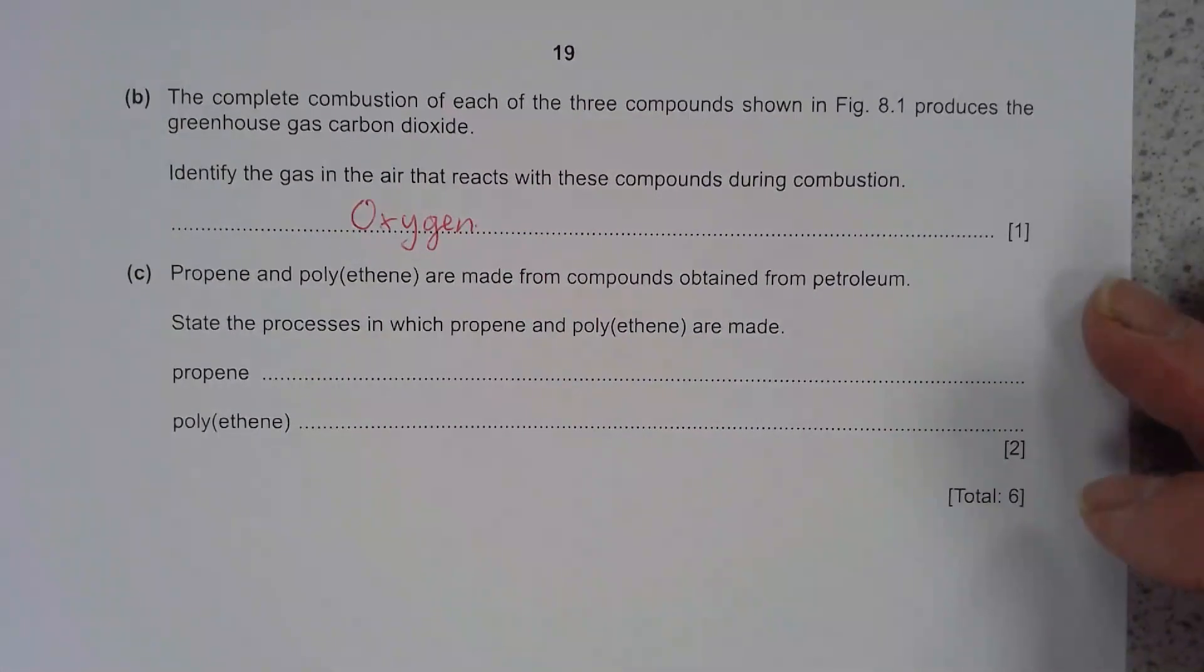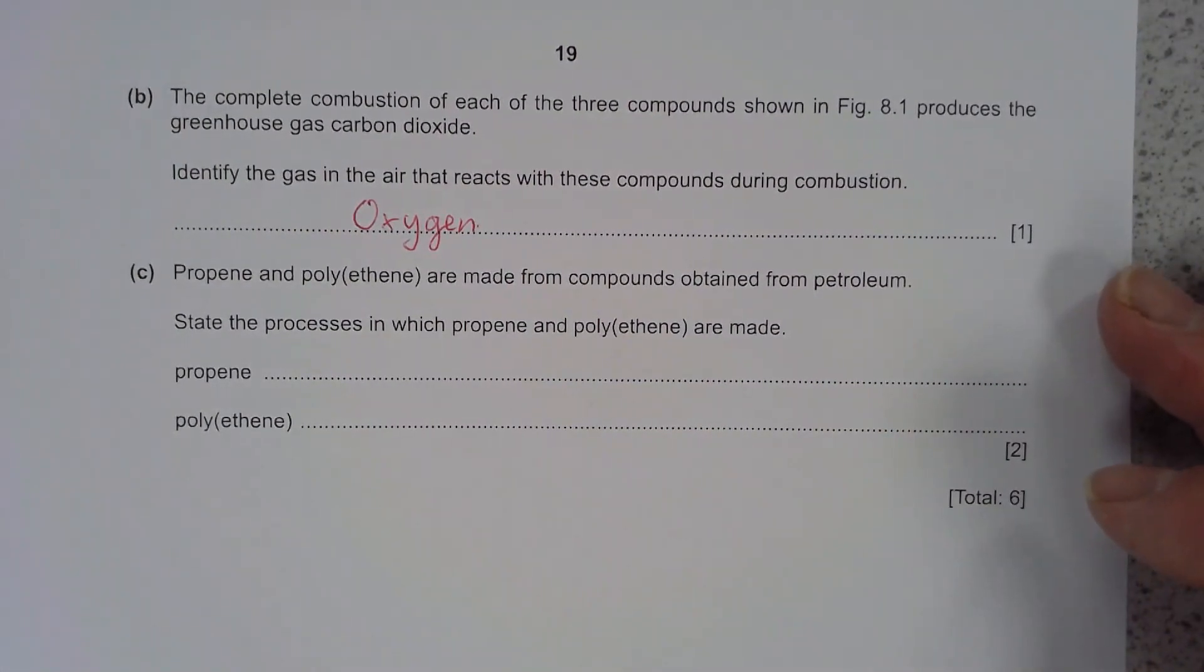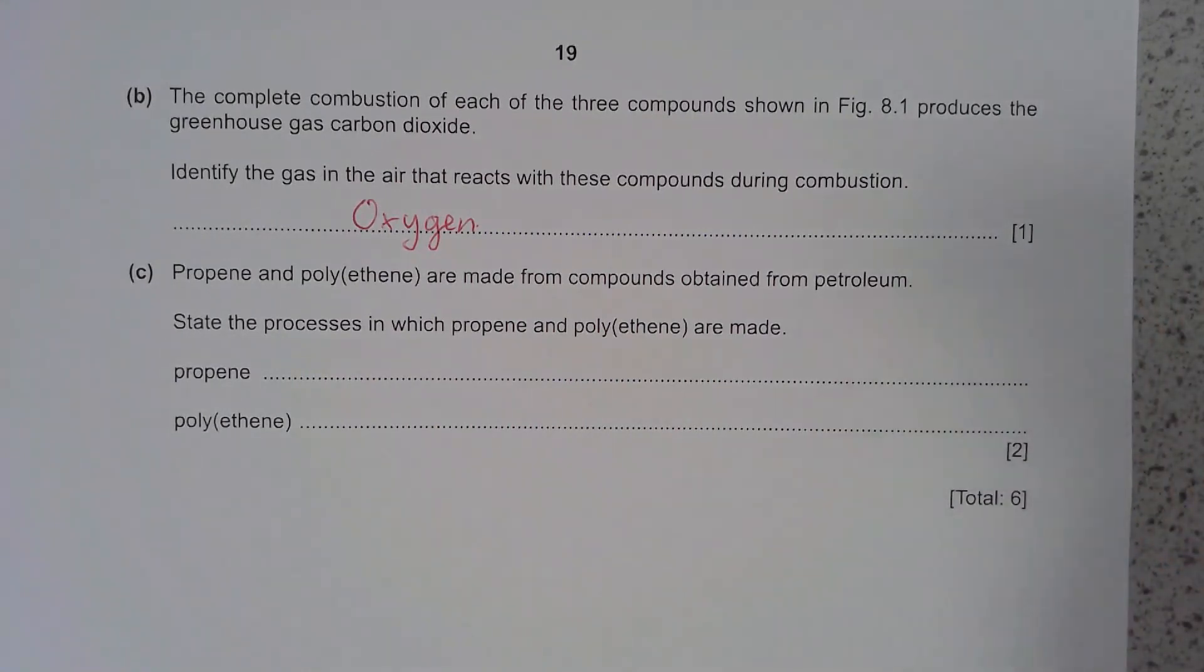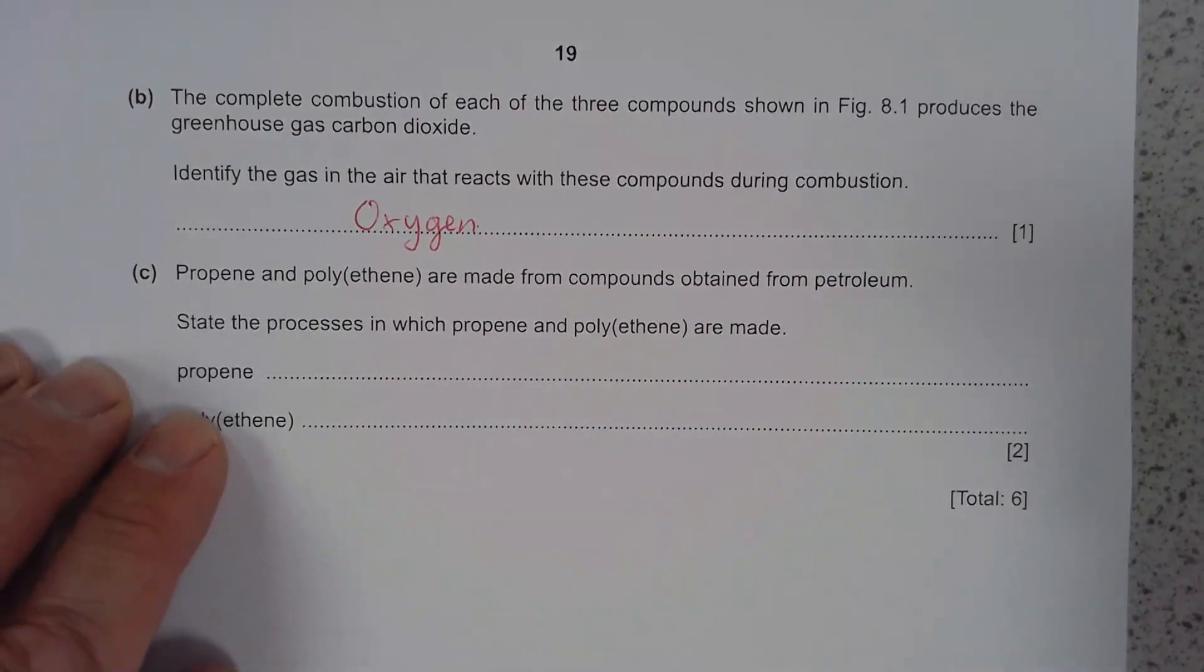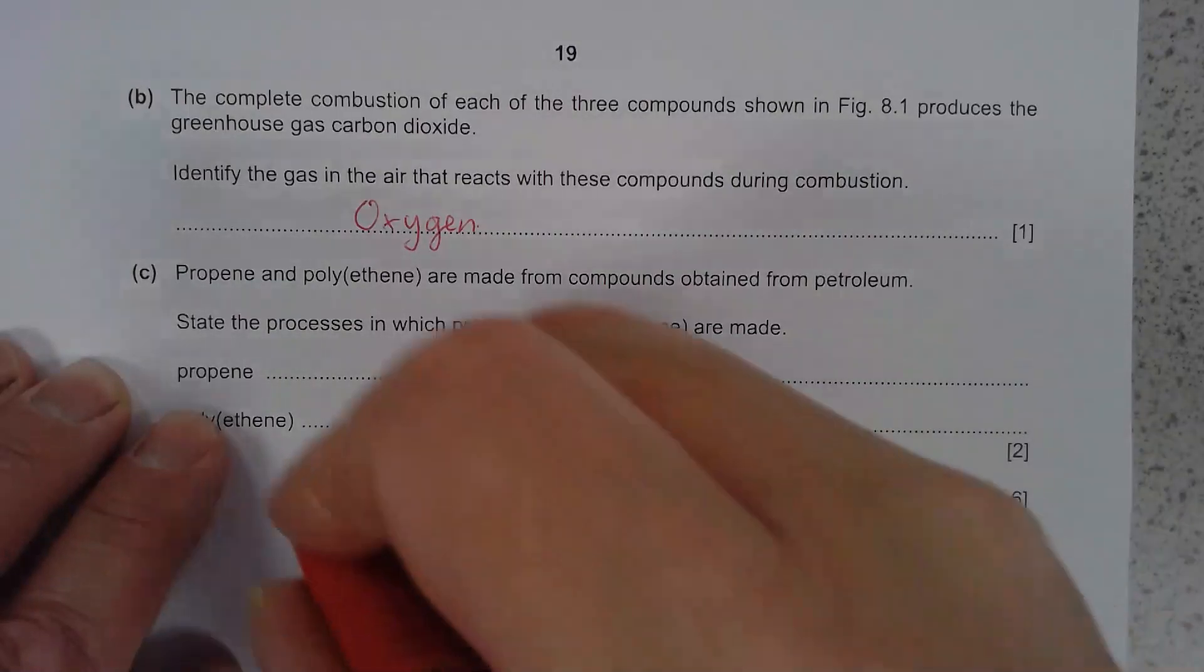Propene and polythene form compounds from petroleum. When they say petroleum, they mean crude oil. That's the black stuff that comes out the ground that they drill for and then extract from the ground. State the process in which propene and polythene are made. So propene is an alkene which can be extracted from this crude oil. The way we extract it is fractional distillation.